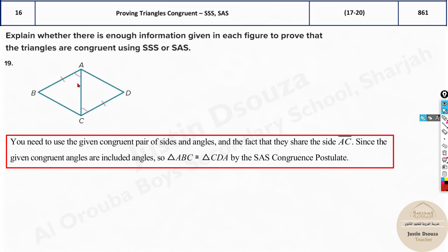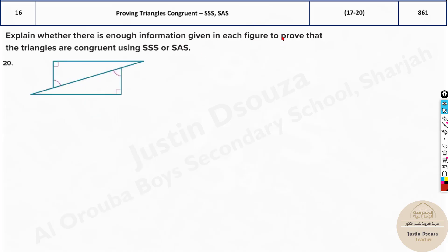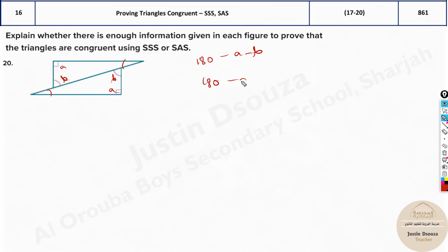So both triangles are congruent to each other. For the last problem, we have one angle and this angle — are they the same? Yes, that angle is the same. If there are two angles equal, then the third must also be equal because it's 180 minus A minus B. So of course this third angle is also the same.